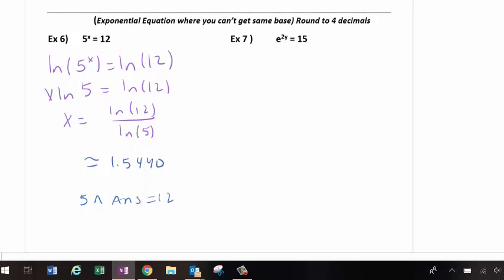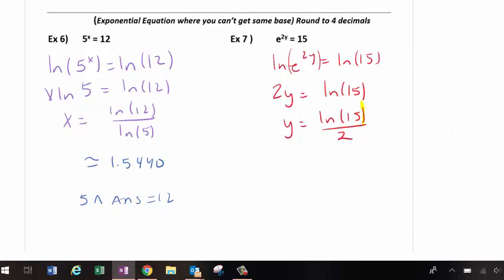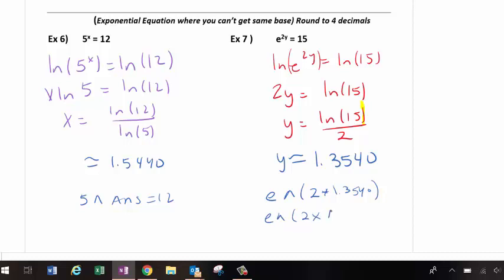So going to number 7, I'm going to still take the natural log of both sides because I can't get the same base on both sides. In this case because natural log and base e are inverses of each other they essentially cancel each other out so the 2y comes down. And now I divide by 2. Remember to close that parenthesis. And we plug this into our calculator. And the way you could check it is e carat parenthesis 2 times 1.3540 which gives me approximately 15 or e carat 2 times answer. Use that answer button on the bottom right hand corner of your calculator.